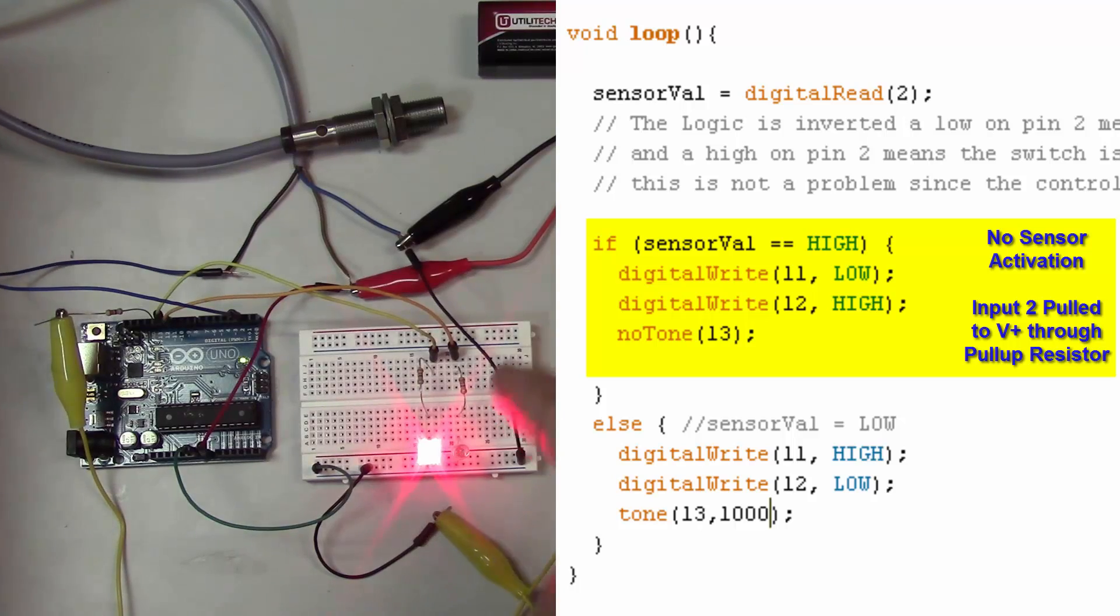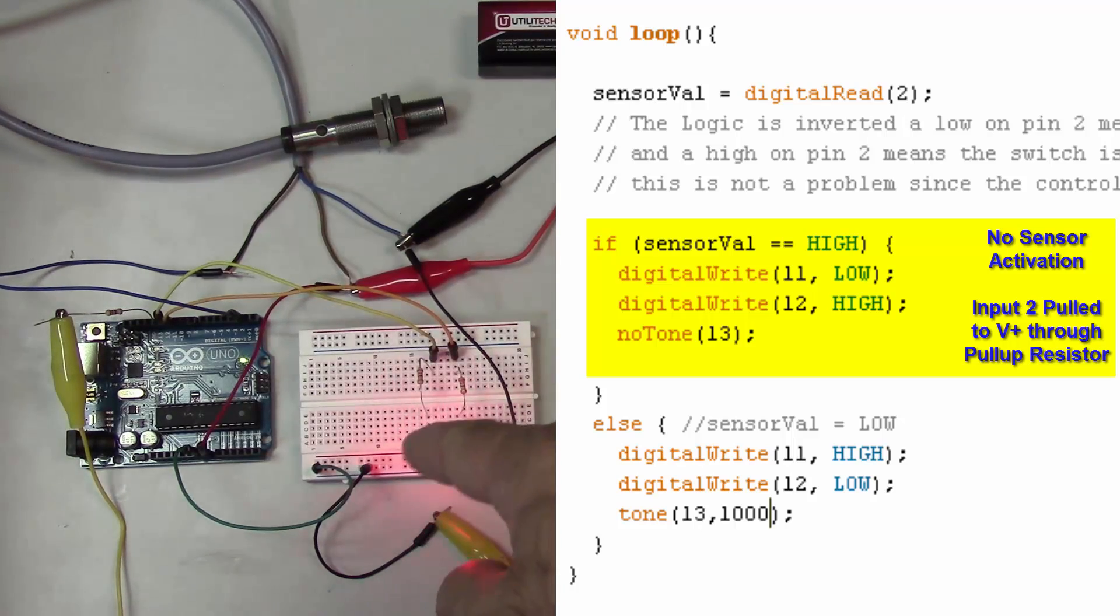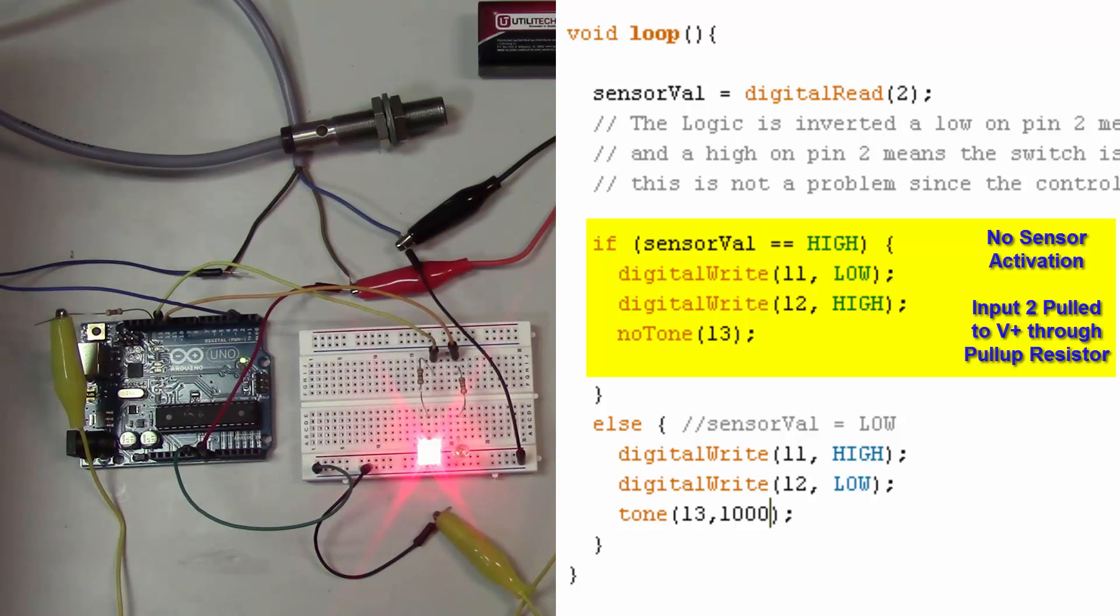So if it's high then we want our pin 11 to be low and that's this LED right here and we want pin 12 to be high that's hooked to our red LED and we don't want any tone under those circumstances either.